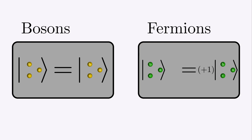Here's a summary of what we've found so far. Swapping identical bosons does nothing. The kets always stay the same. Swapping identical fermions multiplies the ket by minus one.